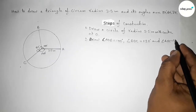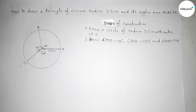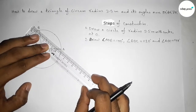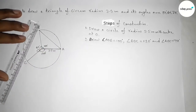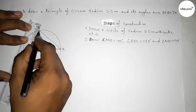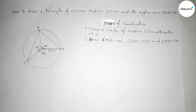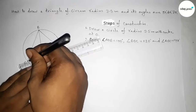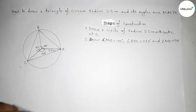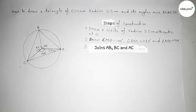Next, we have to join the lines. First joining line AB, then joining side BC, and last joining side AC. Step number three: join lines AB, BC, and AC respectively.